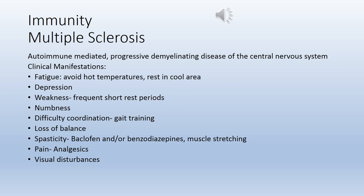In the concept of functional ability, multiple sclerosis is the exemplar. Multiple sclerosis is an immune-mediated, progressive, demyelinating disease of the central nervous system. Demyelination refers to the destruction of myelin, which is the fatty and protein material that surrounds certain nerve fibers in the brain and spinal cord, resulting in impaired transmission of nerve impulses.